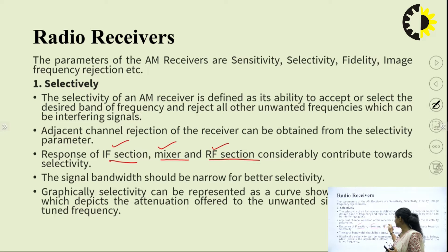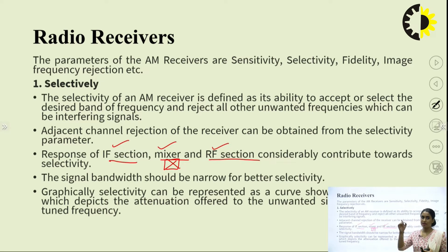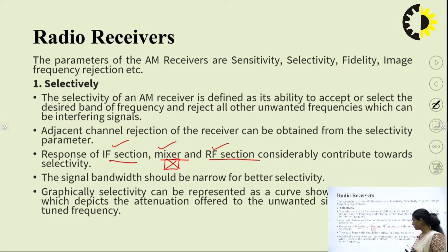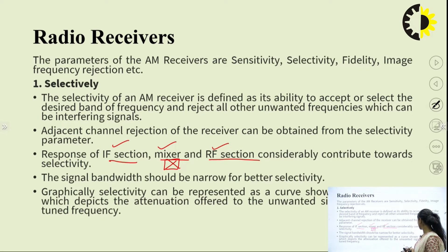All these sections — RF, mixer, and IF — will be studied in detail when we see the block diagram of the receiver. IF stands for intermediate frequency. The mixer section is essentially a product modulator, and the RF section is the radio frequency section, which comes first since the modulated wave propagates at radio frequency. The signal bandwidth should be narrow for better selectivity; if the band gap is too large, there will be too much noise interference.